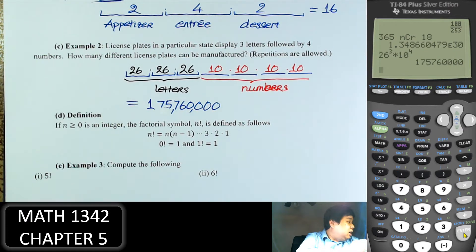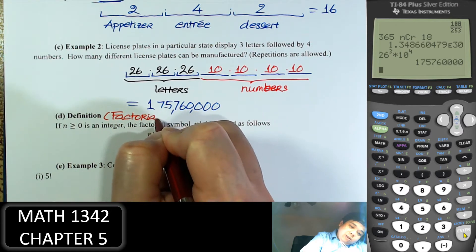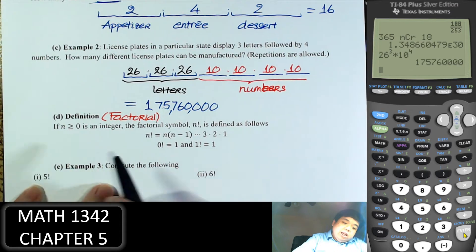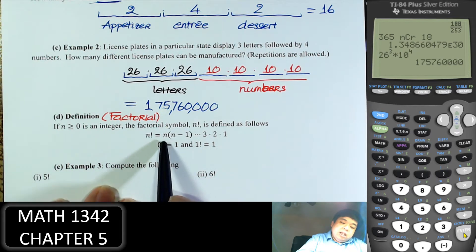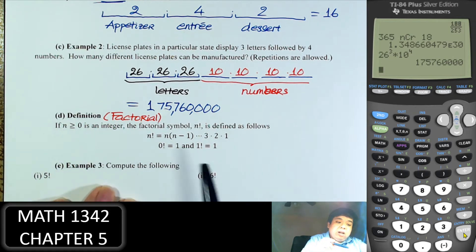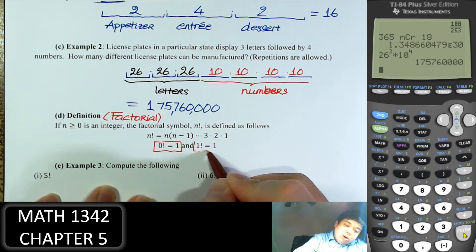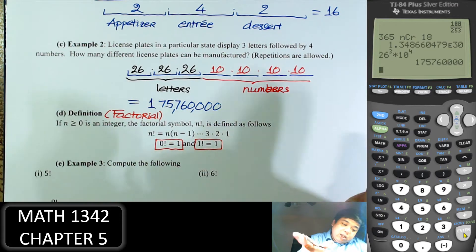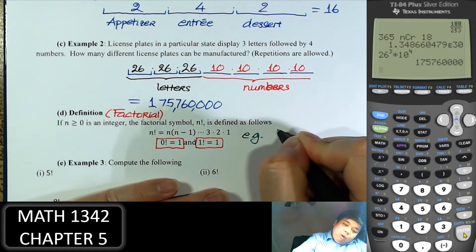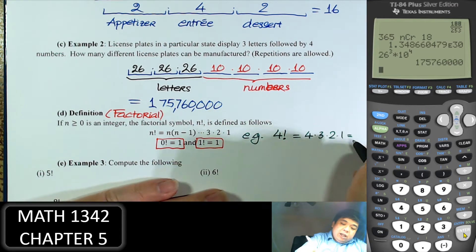Before we go any further, we define a factorial. A factorial, denoted by an exclamation point, means the product starting from that number going back down to one. Factorial is only defined for positive whole numbers or zero. We define zero factorial as one, and one factorial equals one. For example, 4 factorial means 4 times 3 times 2 times 1, which equals 24.